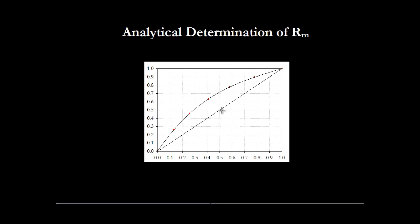When showing this in the graphical method, we have to draw the Q line — so we find Q and then the Q line can be drawn. Then we have to draw the top operating line, which goes through the point (xd, xd), finding the gradient or intercept using the reflux ratio. What we have to identify here is that the Q line and the top operating line are going to intersect at the point where the Q line cuts the equilibrium curve.